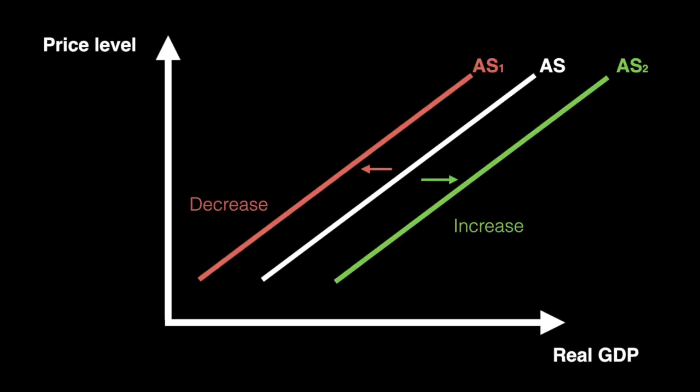In this video we will take a look at the factors that shift aggregate supply in the short run. It will be relatively brief but we have some key takeaways. Quite simply, whenever short run aggregate supply decreases it will shift left, and if it increases it will shift right. Just be sure to always include shifting arrows in your work.